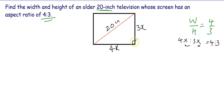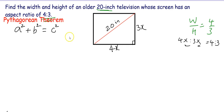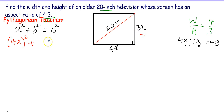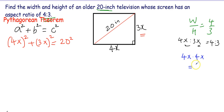This forms a right triangle, so we make use of the Pythagorean theorem, which states that a squared plus b squared is equal to c squared. Taking 4x as a, 3x as b, and c equal to 20, we write: (4x)² plus (3x)² is equal to 20².